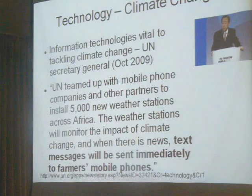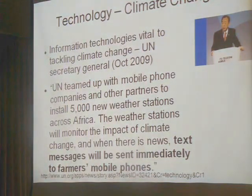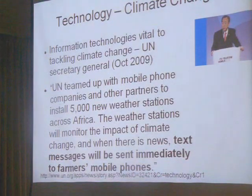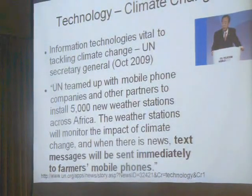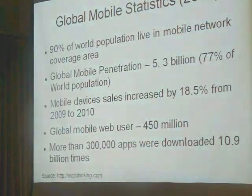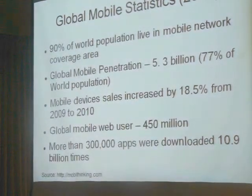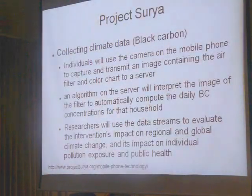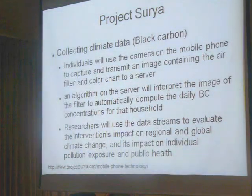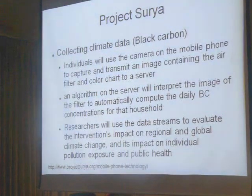The UN partnered with various smartphone and mobile companies and established weather stations, and those stations are used to send text messages to the power of mobile. 90% of the world population live in mobile coverage areas. Mobile is going to be relevant in rural areas, where private data is collected and sent back to the city. The data is probably already obsolete because the climate is changing so rapidly.